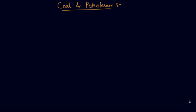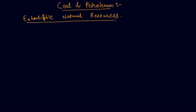Hello students, my name is Sumit Mehta. Today we will study about coal and petroleum. So what are coal and petroleum? Basically these are exhaustible natural resources. Before going into the definition, I will tell you the meaning — 'natural' means occurring naturally. So we can divide all resources: resources can be man-made or can be naturally occurring.